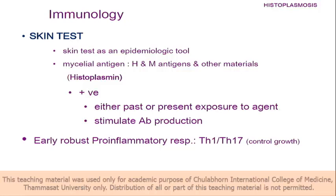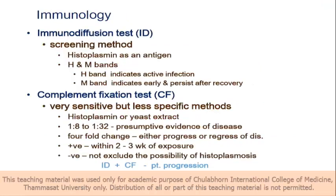Normally, when there is a fungal infection, which T helper cell will react? T helper 1. If the balance of T helper 1 is not good, or T helper 17 is not good, then the interaction will be aggressive. The screening test can use the immunodiffusion test, which has two typical bands: H and M bands. Whereas the complement fixation test at 1:8 or 1:32 is presumptive evidence.